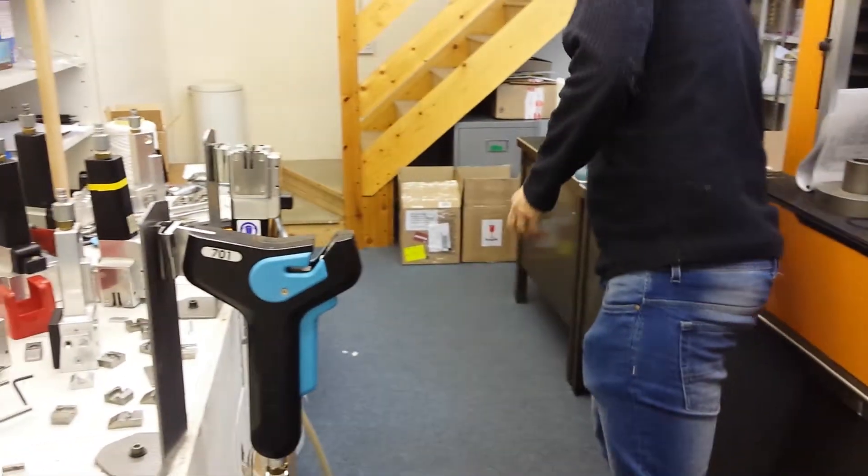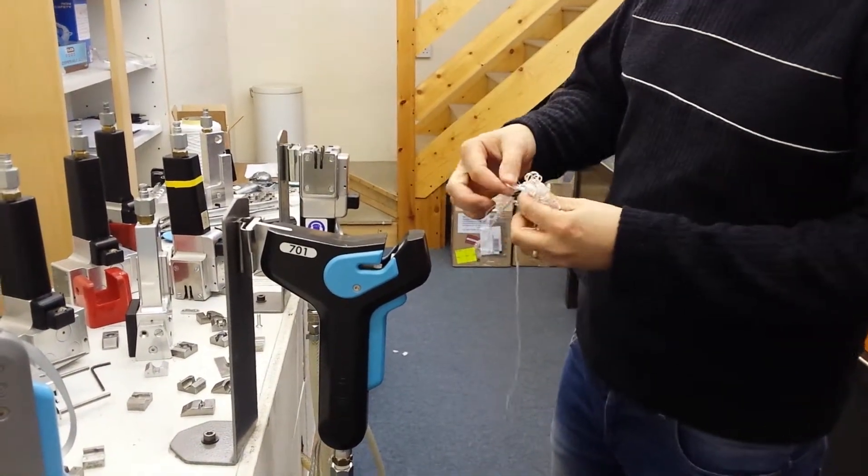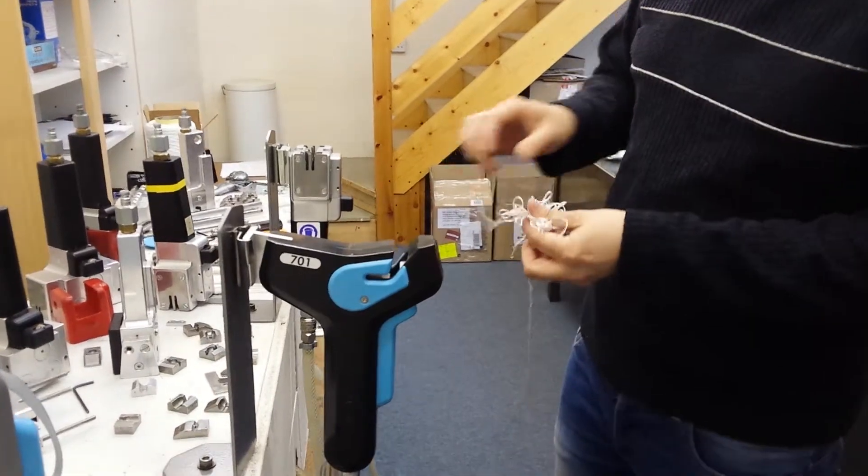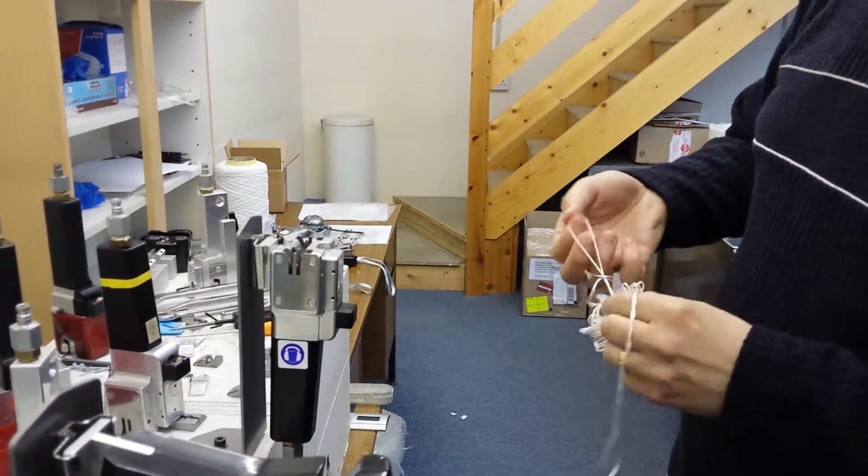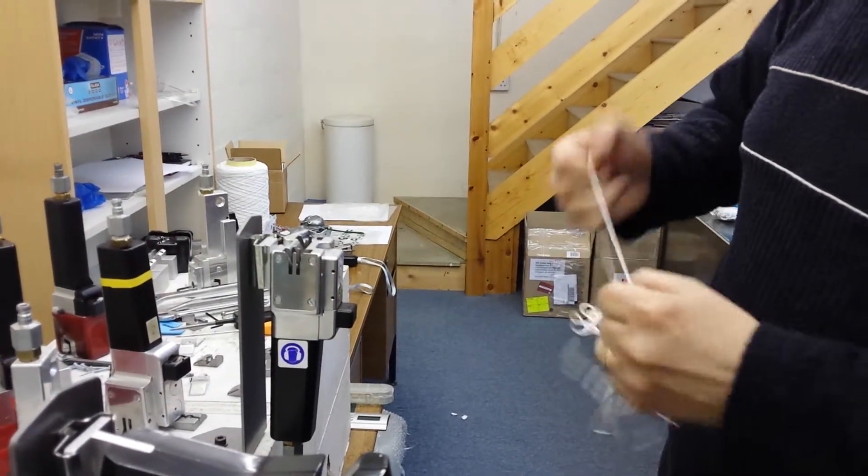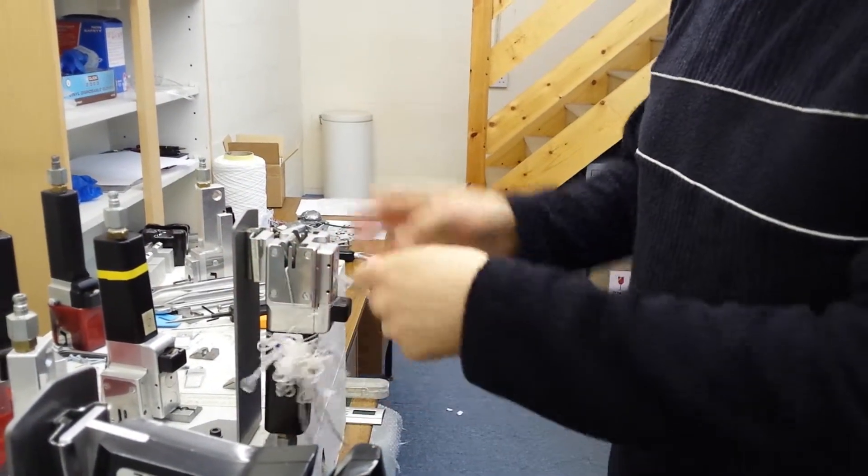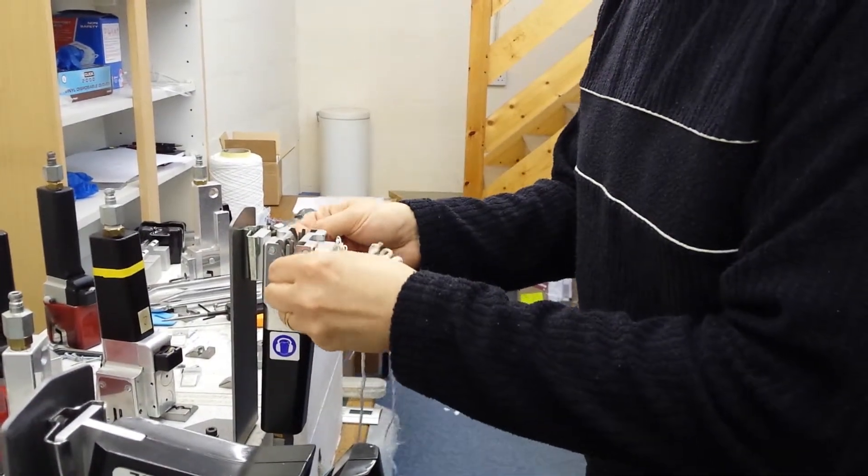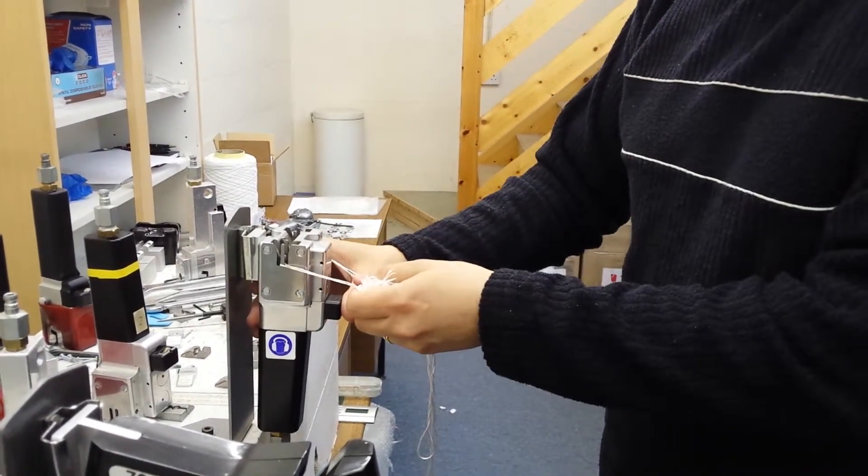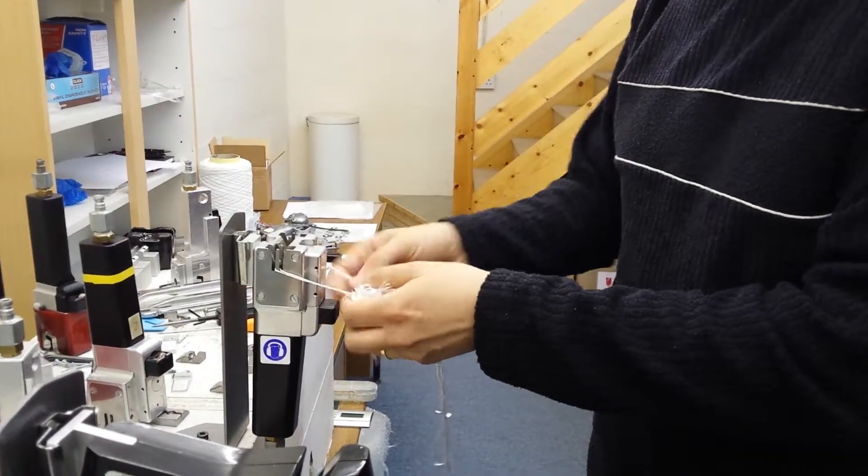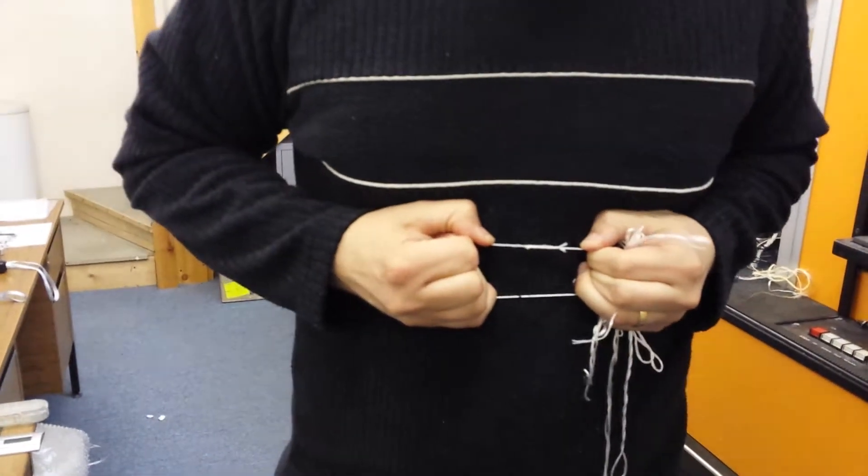And last but not least, this is the 5-ply 1000 denier using the Model 111. You place the yarns in a criss-cross fashion, cutting sink needs to be set to zero, a quick blast, and you're left with the neat strong joint.